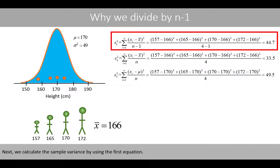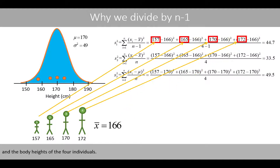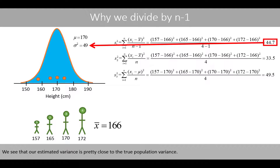Next, we calculate the sample variance by using the first equation. We plug in the sample mean and the body heights of the four individuals. Remember that when we calculate the sample variance based on the sample mean, we divide by n minus 1. We see that our estimated variance is pretty close to the true population variance.